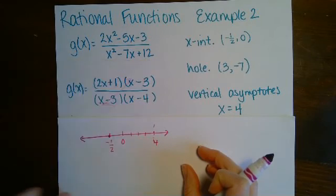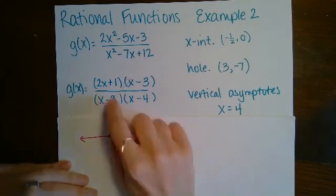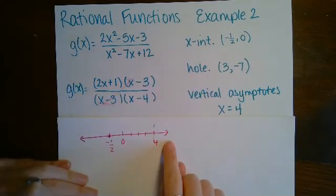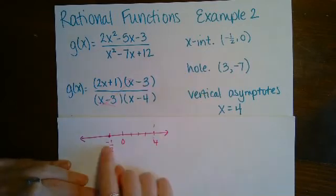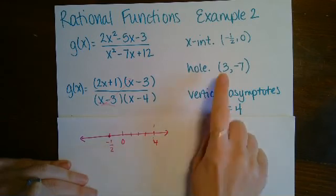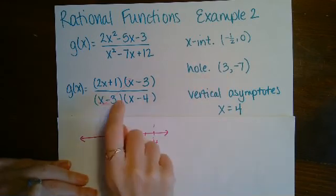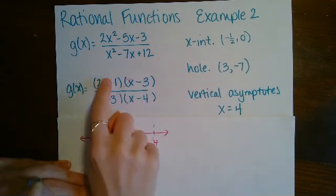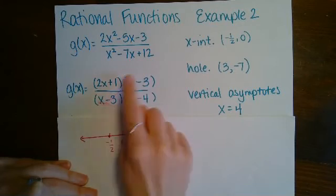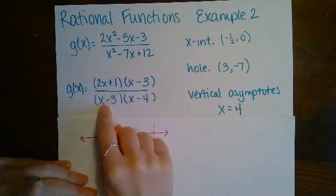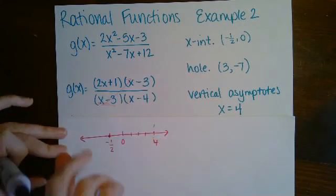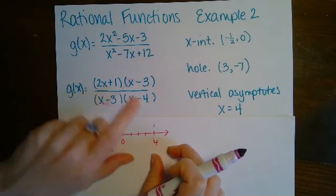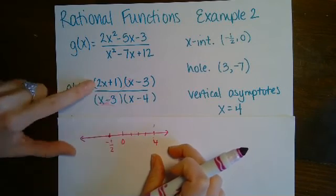Another advantage is that we don't have to plug the value into every factor. As long as we don't plug in three — since there's a hole there — we only need to plug into the two remaining factors, because whatever gets plugged into the canceling factors will always equal one.